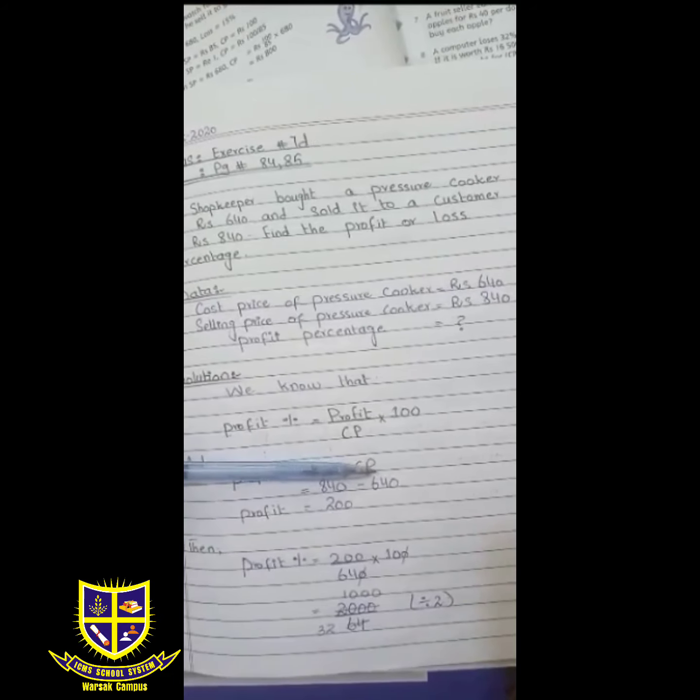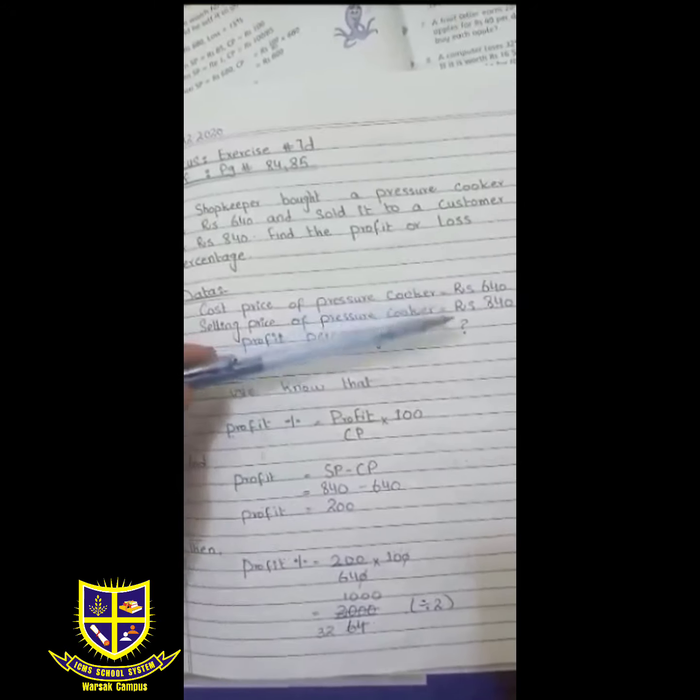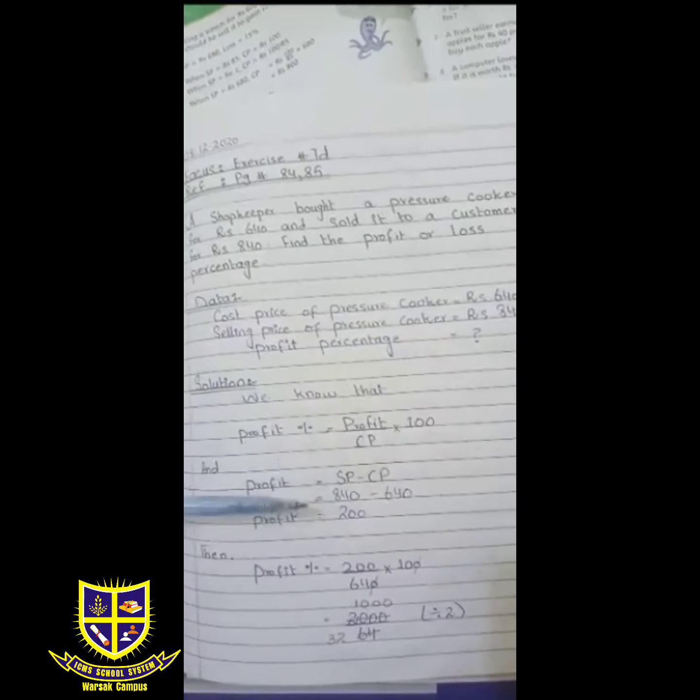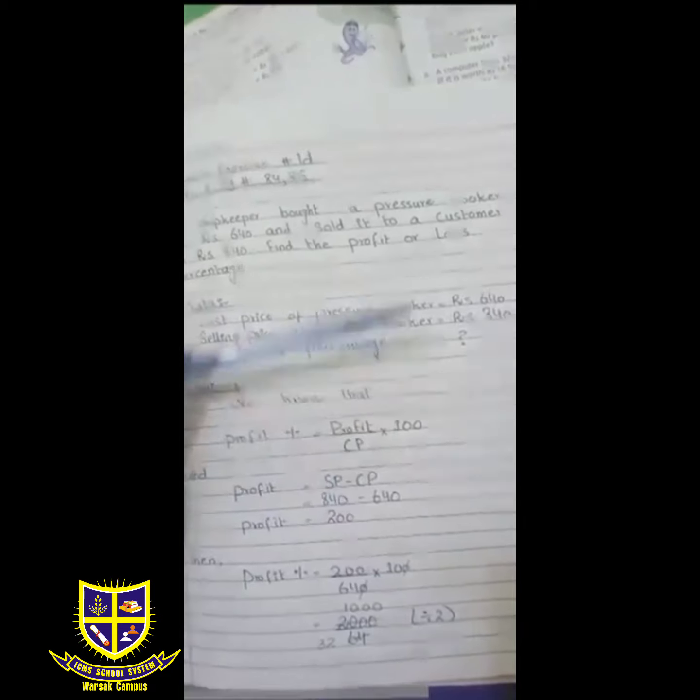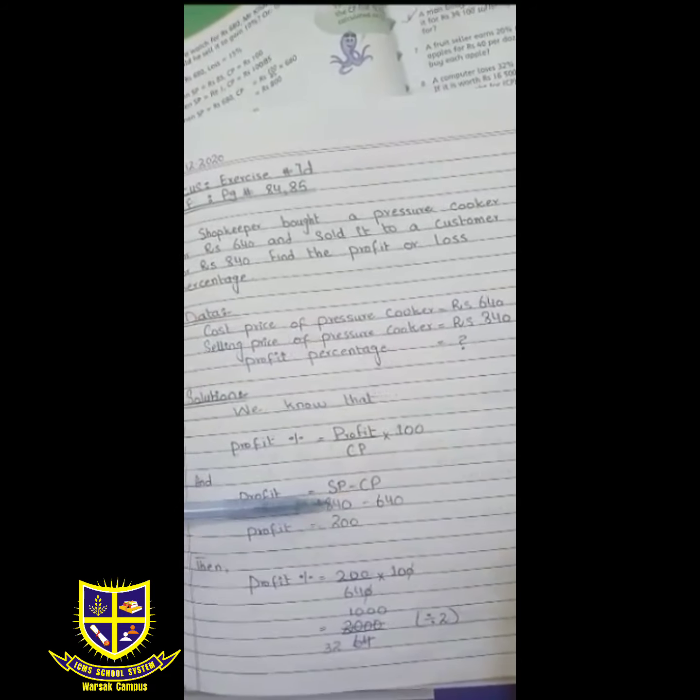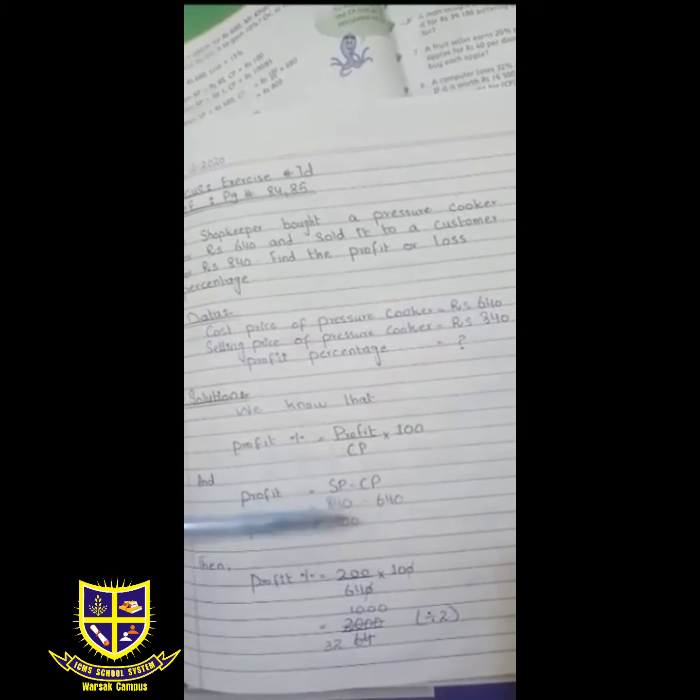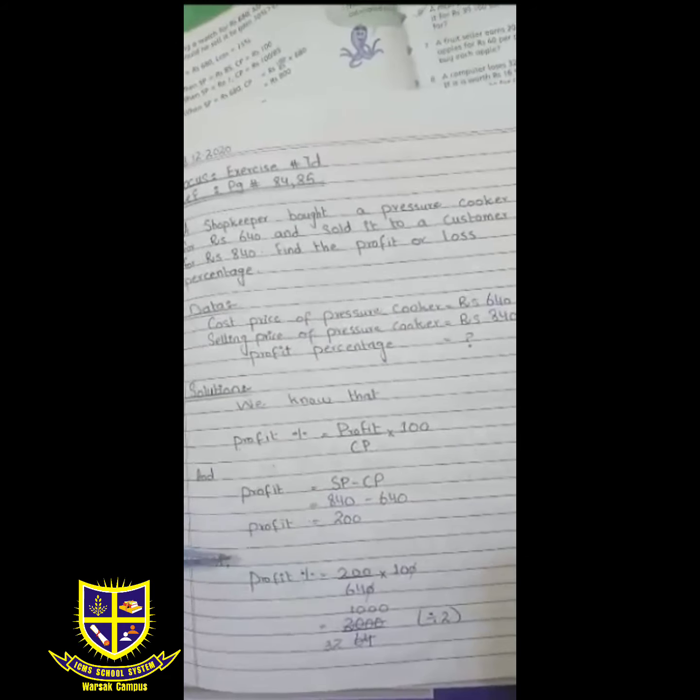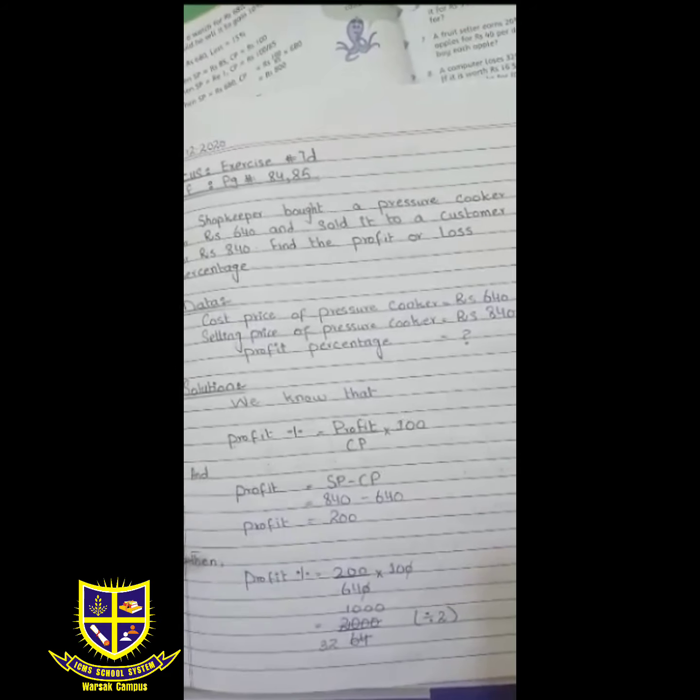CP which is cost price. Selling price is 840. So we have here 840 minus cost price which is 640. So the profit is 200. Then, profit percentage.